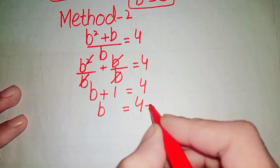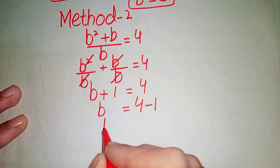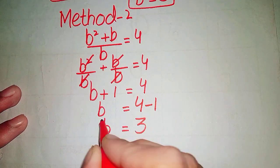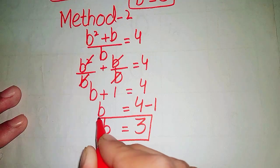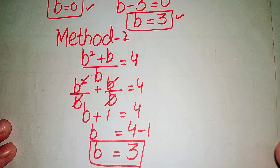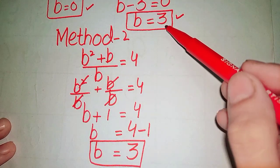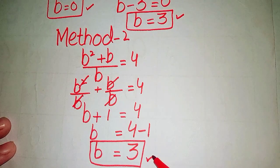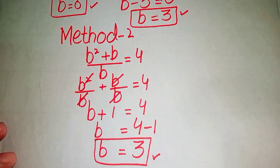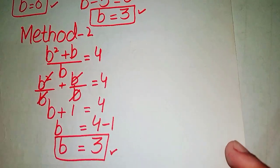Rearranging, b = 4 minus 1, so b = 3. Both methods agree — the value of b is 3.